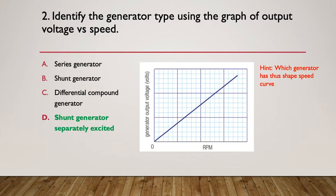And that was the shunt generator, separately excited. So it's a shunt generator where the field is excited from somewhere apart from the generator itself. It has a perfectly straight output line relationship between voltage output and RPM input.